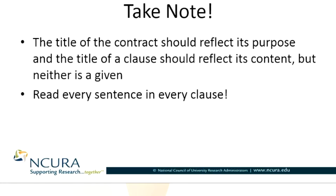Fixed price contracts: a contractor is paid for work completed based upon a pre-agreed or fixed price for the contracted work. The financial risk is on the contractor — the contractor must manage costs to stay within the agreed price. This is the standard method of contracting for commercial items and between commercial entities, whether buying and selling equipment, supplies, services, or other commercial goods. Fixed price contracts are absolutely the predominant method of contracting in the commercial world.